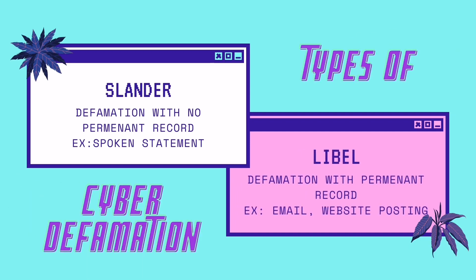The next one is Libel. Libel is a defamation with permanent record, for example, an email or a website posting.